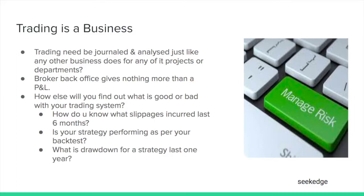If we don't have a journal of our own, if we don't maintain records and analyze the performance, how do we know where the slippage happened? Is the strategy performing the same way as it was backtested? Is it working the same way in forward testing and in live production? What is the current drawdown? All this information is not provided by the broker. It's your strategy and your rules — you're just using brokerage as a platform to put in the trade. So it is mandatory that you have some kind of outcome analysis system of your own.